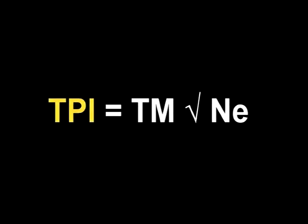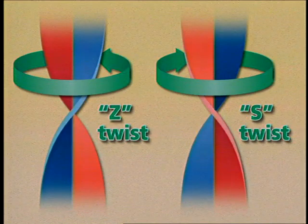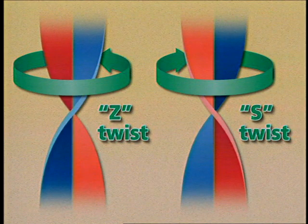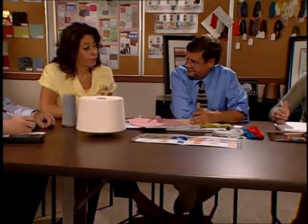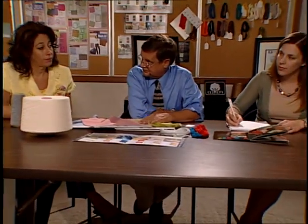In the formula, TPI is turns per inch, TM is twist multiple, and NE is number English or cotton count. Twist level may also be expressed in other ways, such as turns per meter. When communications between parties involve twist, it's important to know the terms and units being used.